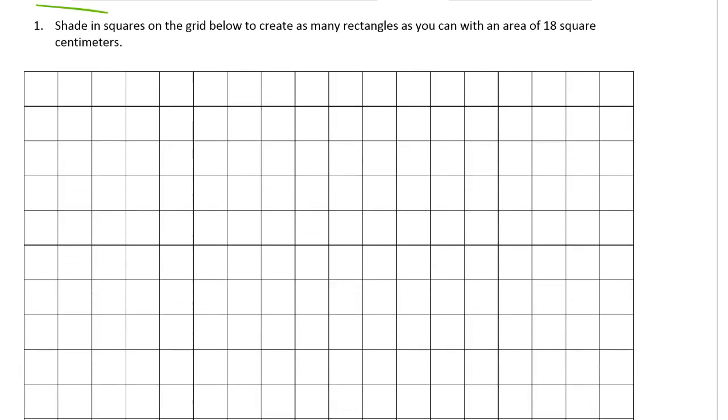Shade in squares on the grid below to create as many rectangles as you can with an area of 18 square centimeters. Now the idea for this is not to fill in the entire space with different rectangles, but to find all the rectangles that can have an area of 18 square centimeters. So we're thinking of rectangles, right?